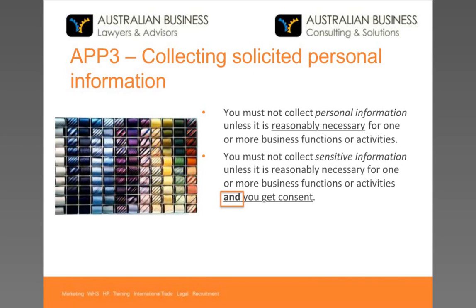APP3 regards collecting solicited personal information — where you've taken an active step to collect that information, for example by submitting a form for them to fill out. A guiding principle is that you should only collect information that is reasonably necessary for one or more of your business functions or activities. If you do not need that information, that might be grounds for the conclusion that it's not necessary. For sensitive information, you must also get consent.